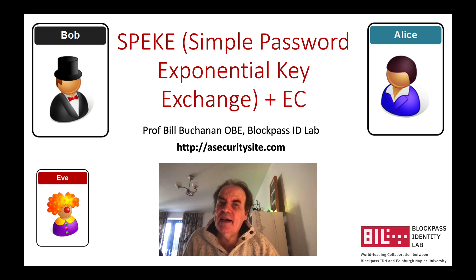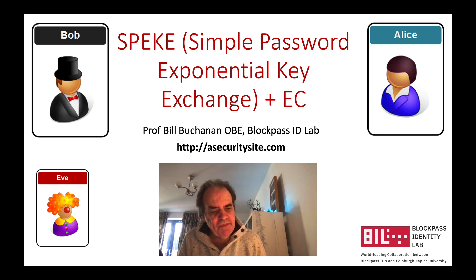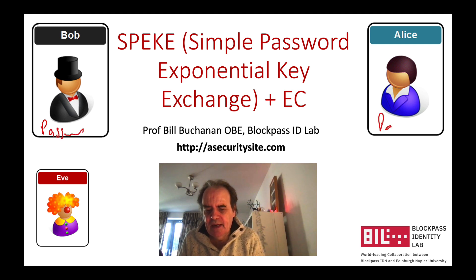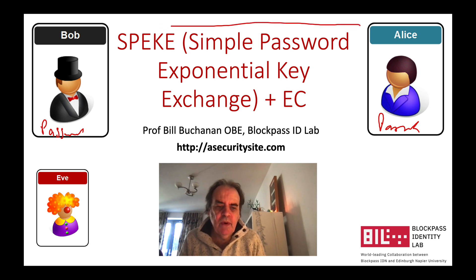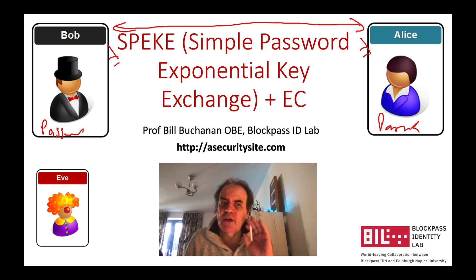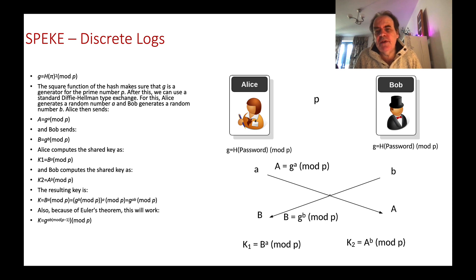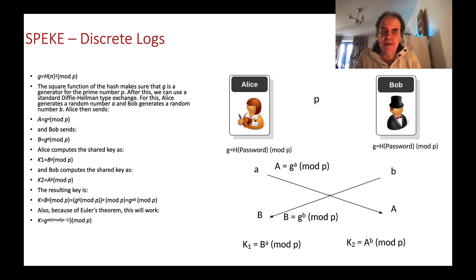Let's look at a simple password exponential key exchange. In this case, Bob has a password and Alice also has a password, and what we'll be able to do is generate an encryption key based on those passwords. The first method we'll look at is the implementation using discrete logs, and then we'll look at how we can implement this with elliptic curve methods.